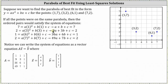So solving the system of equations is the same as solving the matrix equation A times vector x equals vector b. The system will have a solution if all the points fall on the same parabola. If there's no solution, then all the points would not fall on the same parabola, and we would have to find the parabola of best fit — in this lesson, using the method of least squares solutions.